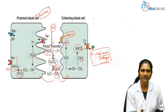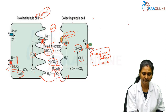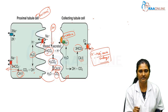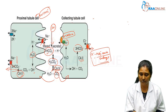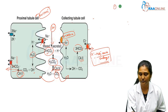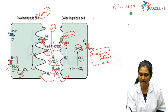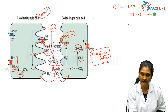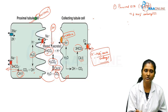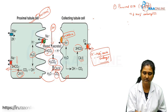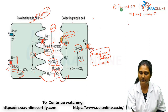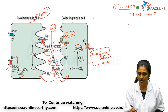This is the normal urinary acidification process. When there is a defect in any of these channels, renal tubular acidosis develops. There are broadly four types of RTA. The first is proximal RTA, also called type 2 RTA, in which there is decreased bicarbonate reabsorption in the proximal tubule. When there is a problem in these channels, proximal renal tubular acidosis or type 2 RTA occurs.